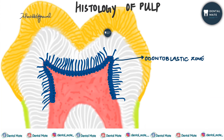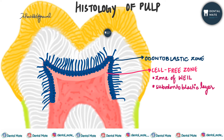After the odontoblastic zone, towards the inner side, is the cell-free zone. It is a thin layer, also known as the sub-odontoblastic layer or the zone of Weil. This zone contains very few cells, numerous bundles of reticular core fibers, and a plexus of capillaries and nerves.